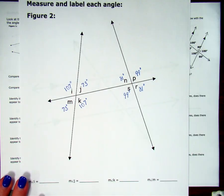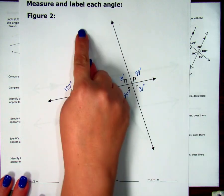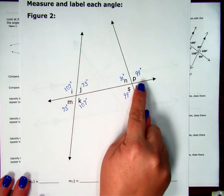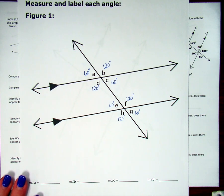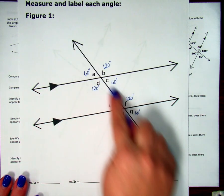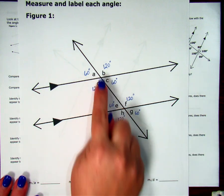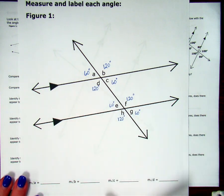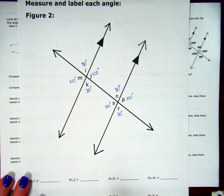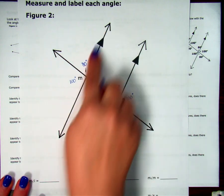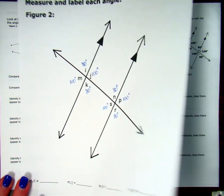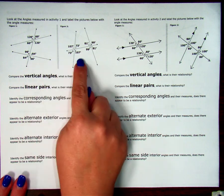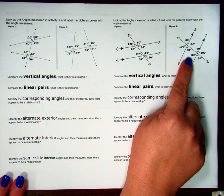Then we did another set where we had one transversal crossing two lines, and we measured the four angles at each intersection. We did that same thing two more times — one transversal crossing two lines and measuring the four angles at each intersection. So these are the results of the four sets of lines that we measured angles for.